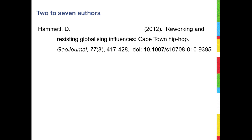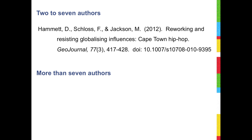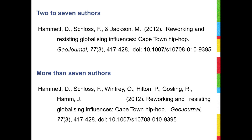For an article that lists between 2-7 authors, put a comma after each author's name and type an ampersand before the last author is listed. For more than 7 authors, enter the first 6 authors, comma, and ellipses, and then include the final author.